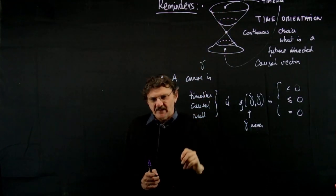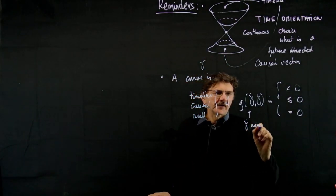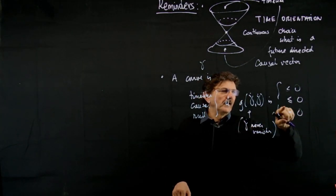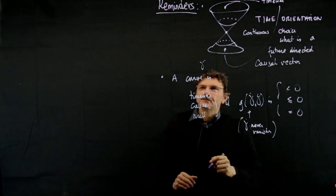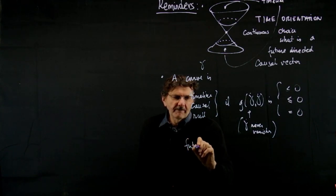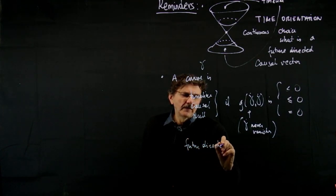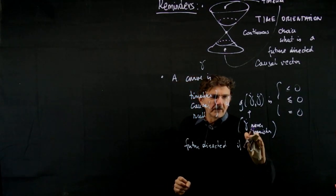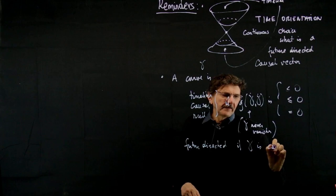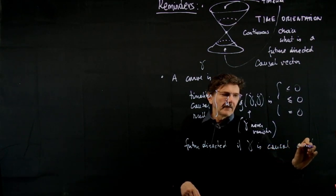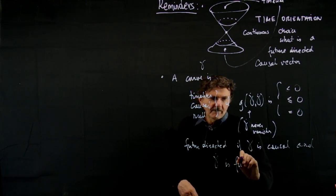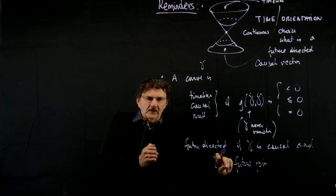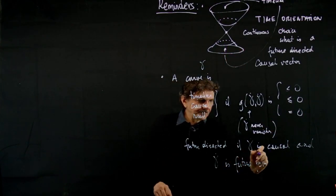We don't want curves where you follow the curve for a while and sit at a place for two hours then continue — that works in space but not in time. A curve is future directed if it is causal and gamma dot is future pointing everywhere. We don't want a curve that goes a little to the future, then to the past, then to the future again.